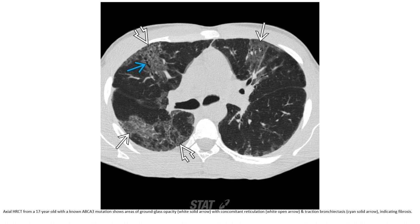HRCT of a 17-year-old known case of ABCA3 mutation, showing areas of ground glass opacity with concomitant reticulation and traction bronchiectasis, indicating fibrosis.